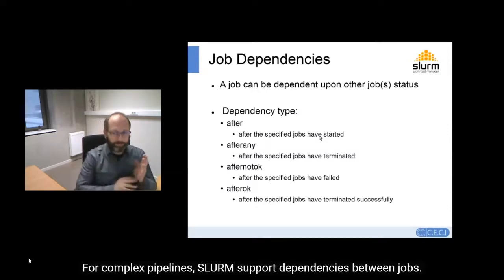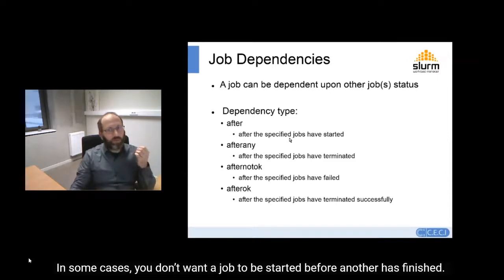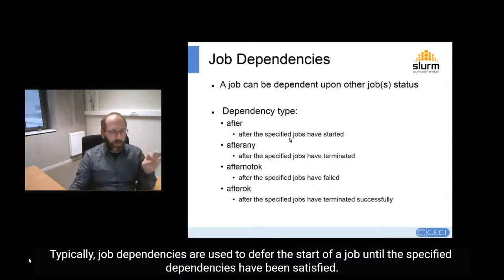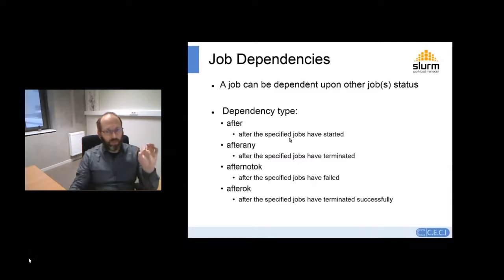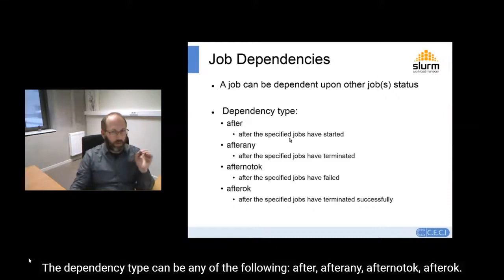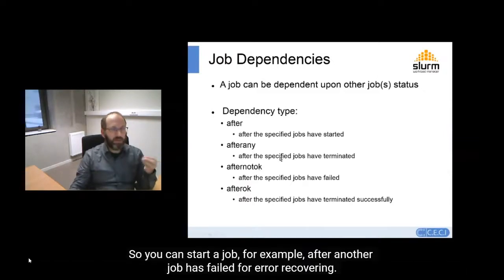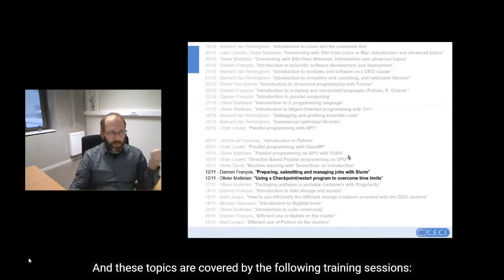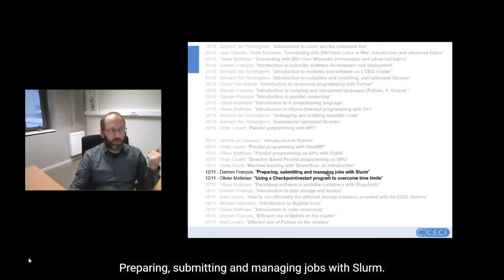For complex pipelines, SLURM also supports dependencies between jobs. In some cases you don't want a job to start before another has finished, so you can specify in the sbatch script that a job has a dependency with another one. Job dependencies are used to defer the start of a job until the specified dependency has been satisfied. Dependency types can include starting a job after another has failed, useful for error recovery. These topics are covered by the following training sessions: preparing, submitting and managing jobs with SLURM, and using checkpoint-restart programs to overcome time limits.